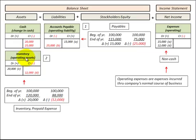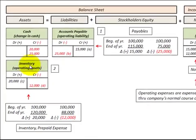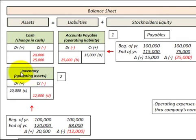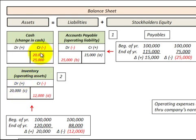Now let's look at an expense derived from an asset — for example, inventory or prepaid expense. This is where we pay cash for the inventory or prepaid expense before we use it or recognize it as an expense. Say we had a beginning balance of $100,000 in inventory and it increased to $120,000 by year-end — a $20,000 increase. We'd increase inventory by $20,000 and reduce cash by $20,000.